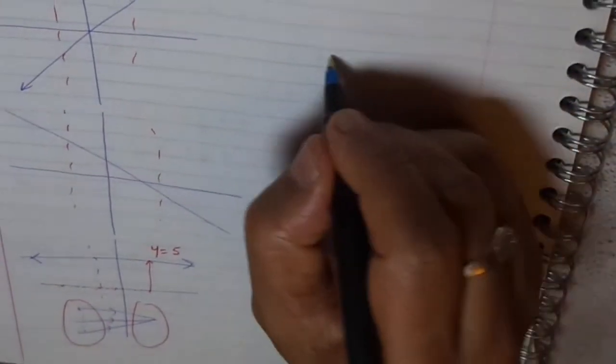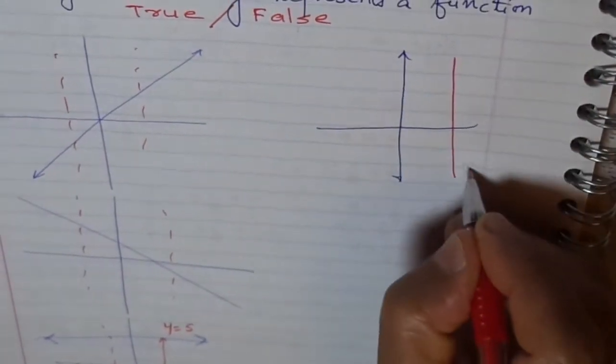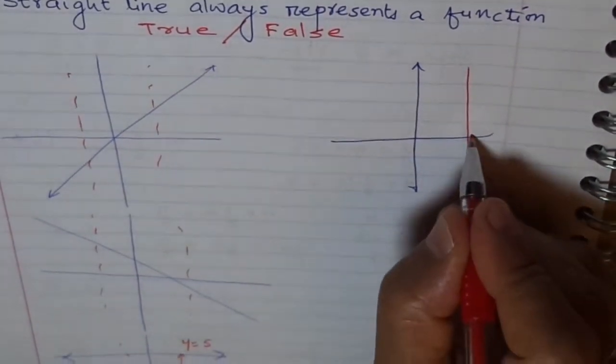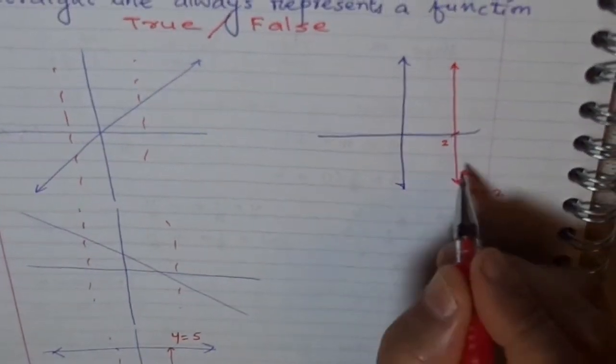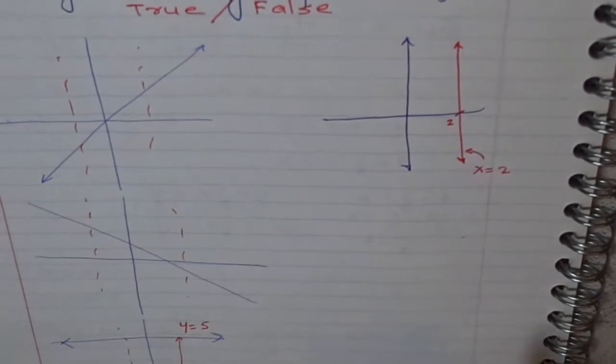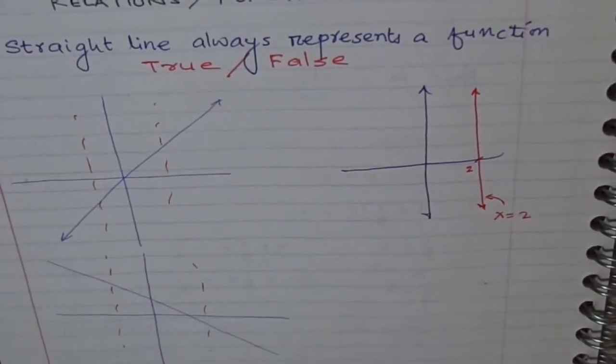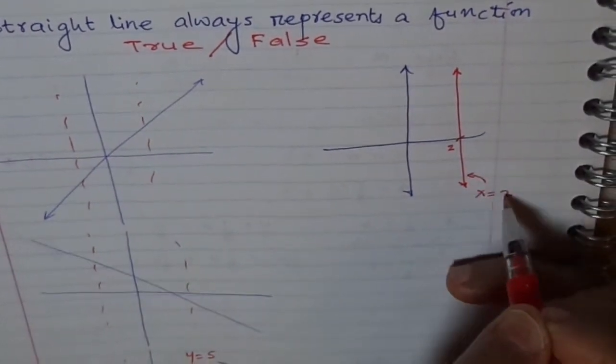How about this line? Consider this line. Let's say the line equation is x equals 2, where this point is 2. Does this represent a function? It doesn't. Why?